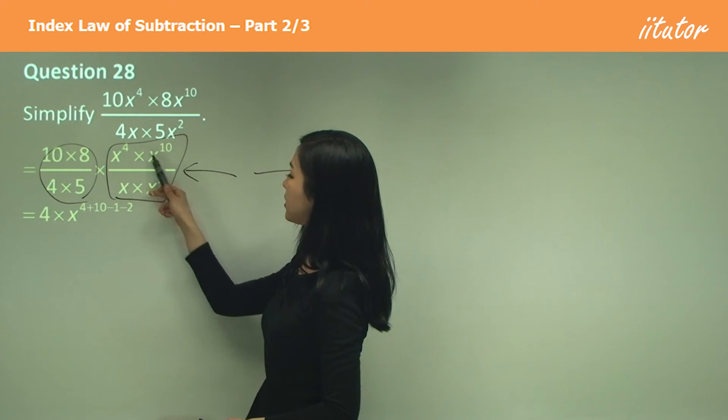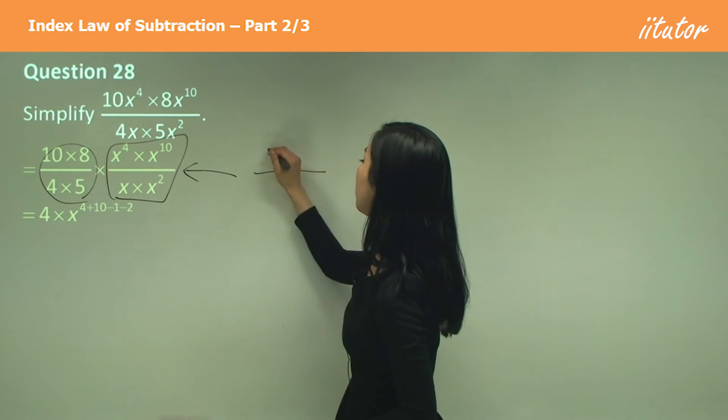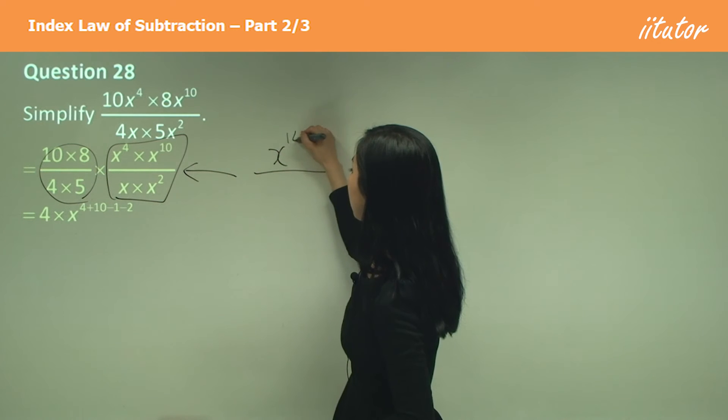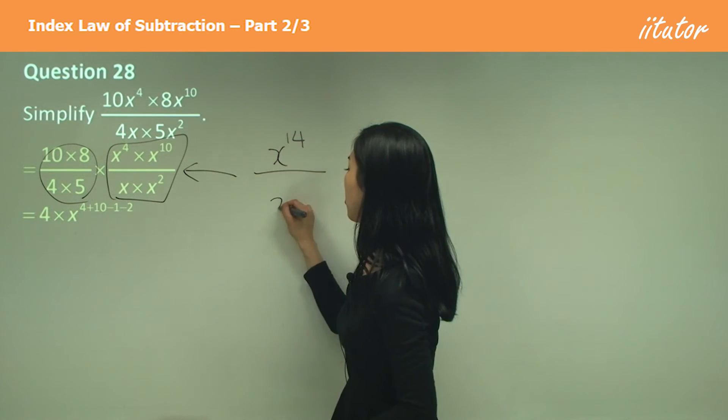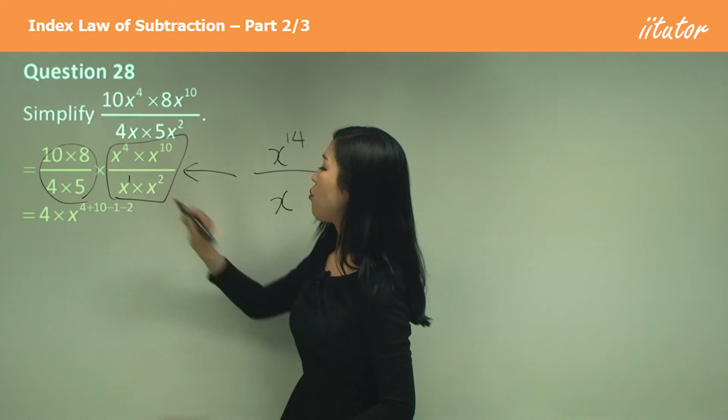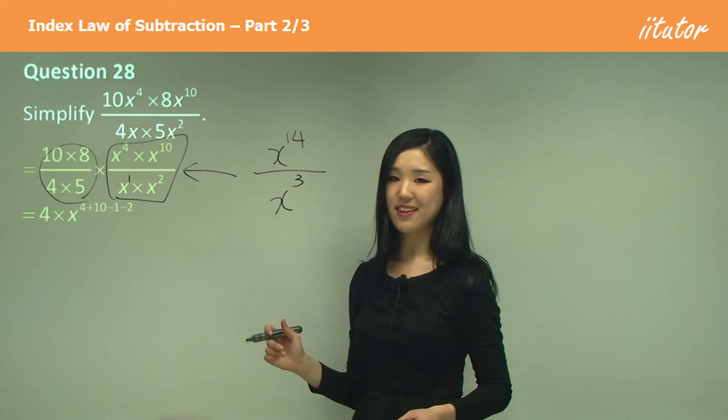See how x to the power of 4 times x to the power of 10, we're multiplying, so we add the indices. It's going to be x to the power of 14. On the bottom, we have x to the power of 1 times x to the power of 2, so it's x to the power of 3. Because we're multiplying, we add the indices.